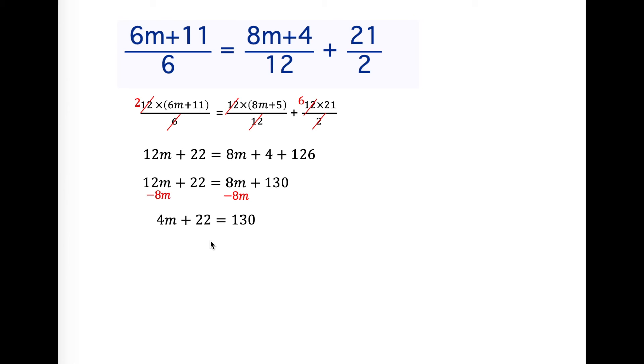I want to get rid of that 22. I'm going to subtract 22 from both sides and that gives us 4m equals 108. To get rid of the 4 it's multiplying the m, I'm going to do the opposite. I'm going to divide by 4. I divide both sides by 4 and we end up getting m equals 27.